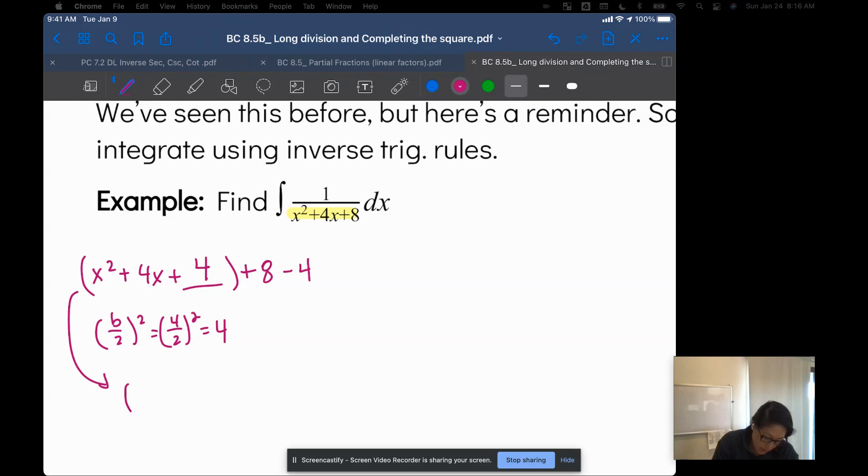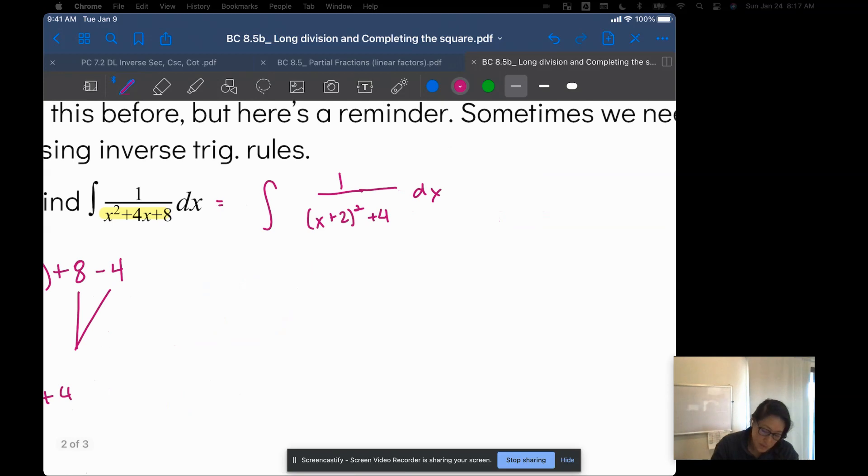So factoring, I get x plus 2 squared plus 4. So I can rewrite this integral as 1 over x plus 2 squared plus 4 dx. And the reason why I like this is because this is an arctangent integral. I have my u squared plus my a squared for arctan.